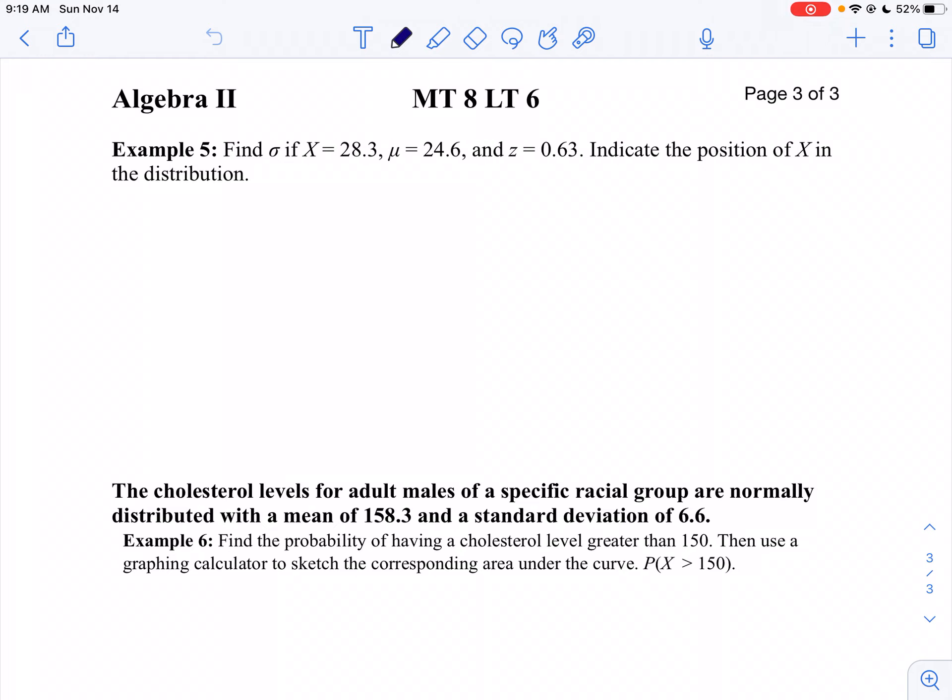The first thing I'm going to do, I'm going to write down my formula because I probably don't have this memorized yet. So z equals x minus my mean, divided by the standard deviation. I'm going to plug in what I know here. I know my z-score is 0.63. I know my data value is 28.3, and I know my mean is 24.6.